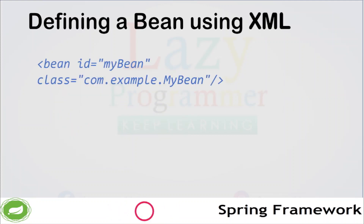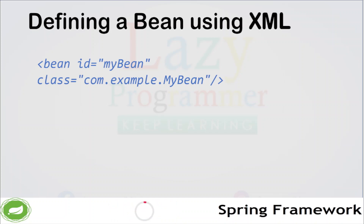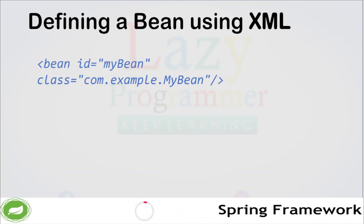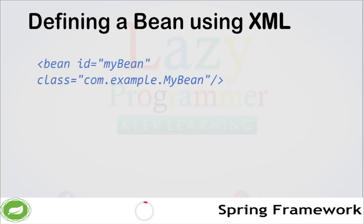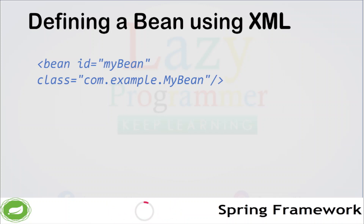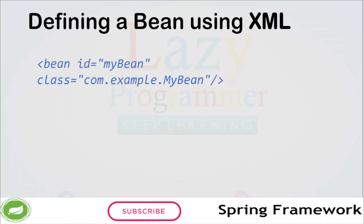Spring Beans can also be defined using XML. Here is an example of how to define a Bean using XML. We need to add a tag in XML with the Bean ID, which is the name of the Bean, and then the class of that Bean with the fully qualified package name. The XML definition will create a Bean with ID myBean and of class com.example.myBean.